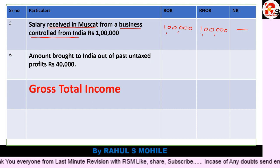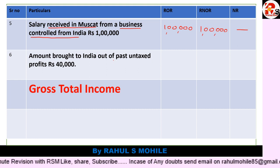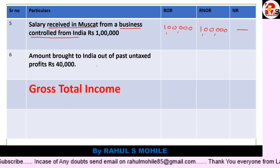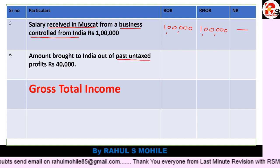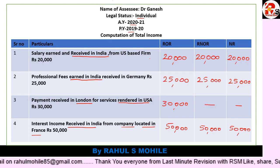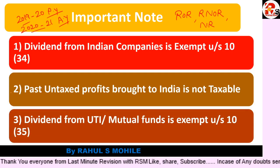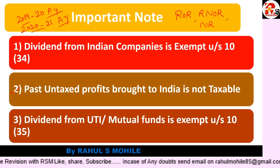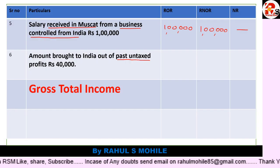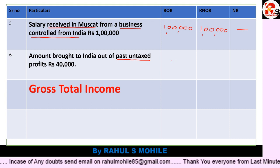Next point: amount brought to India out of past untaxed profits — ₹40,000. As noted in the important points, past untaxed profits brought to India is not taxable. So we will not write this in any column — dash in ROR, RNOR, and NR.